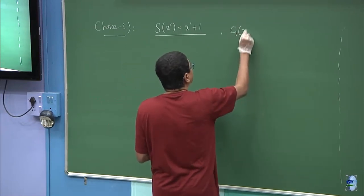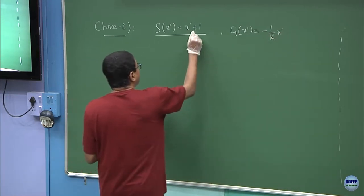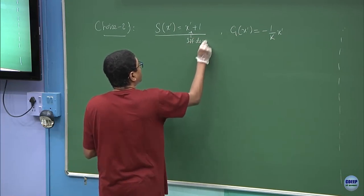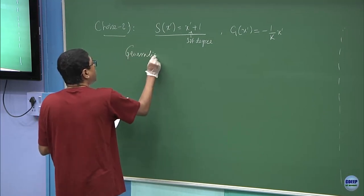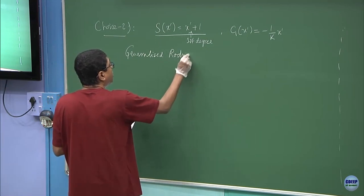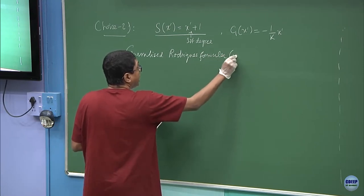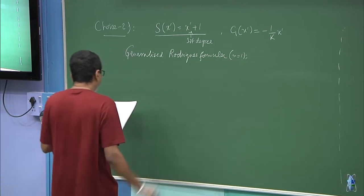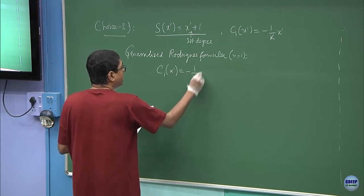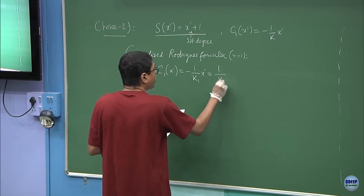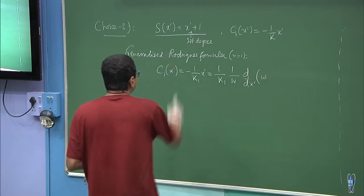We have C1(x') equal to, as before, a first degree polynomial. We go to the generalized Rodrigues formula and use n equal to 1 and substitute these. So C1(x') would be minus 1 by k1(x'), but according to the general formula that will be k1 times 1 divided by w, times d/dx' of w times s, where s is the linear function.